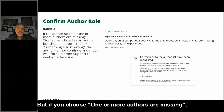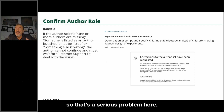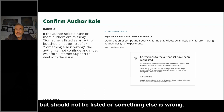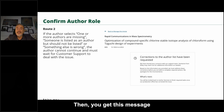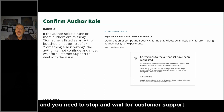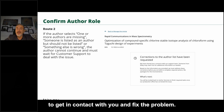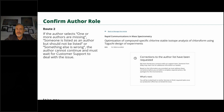But if you choose 'One or more authors are missing,' that's a serious problem. If someone is listed as an author but should not be, or something else is wrong, you get this message and you need to stop and wait for customer support to get in contact with you and fix the problem.